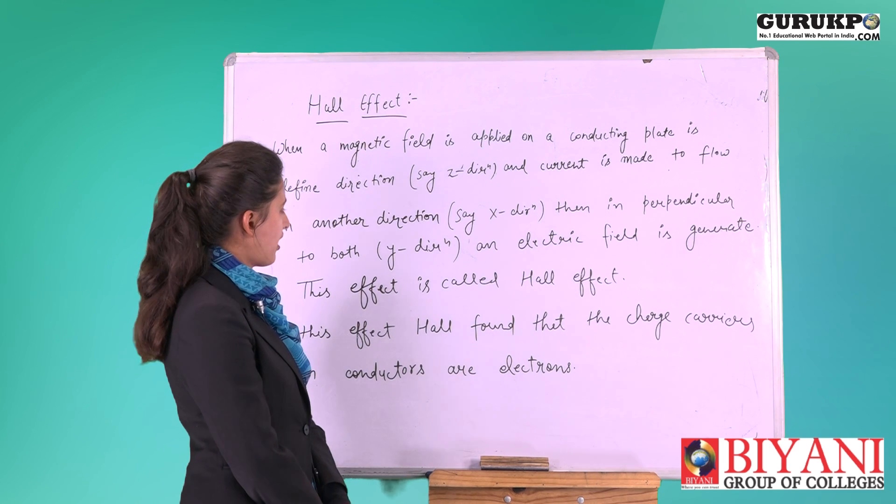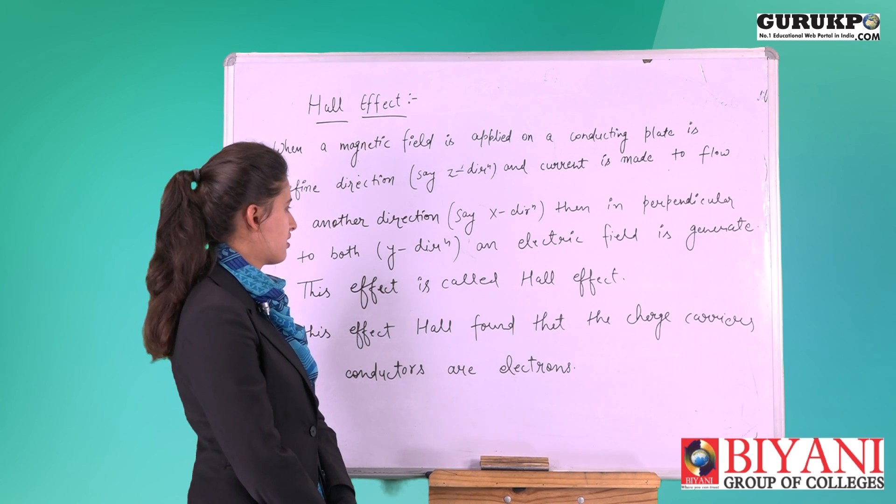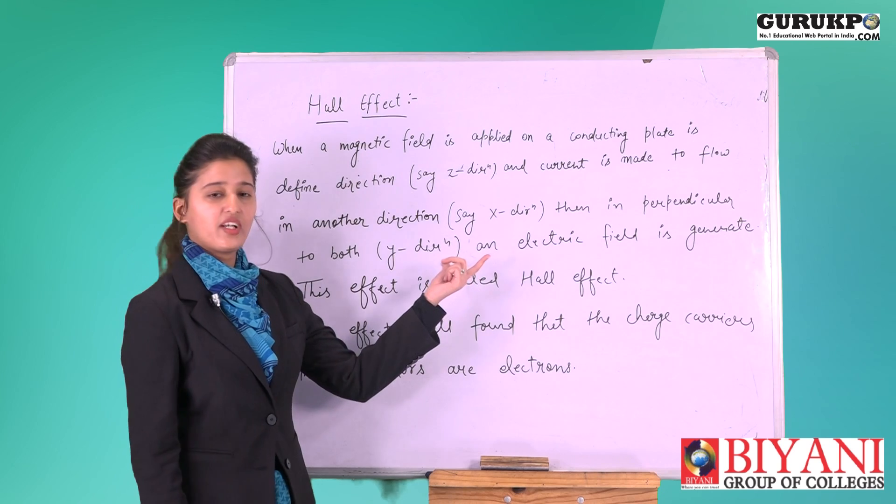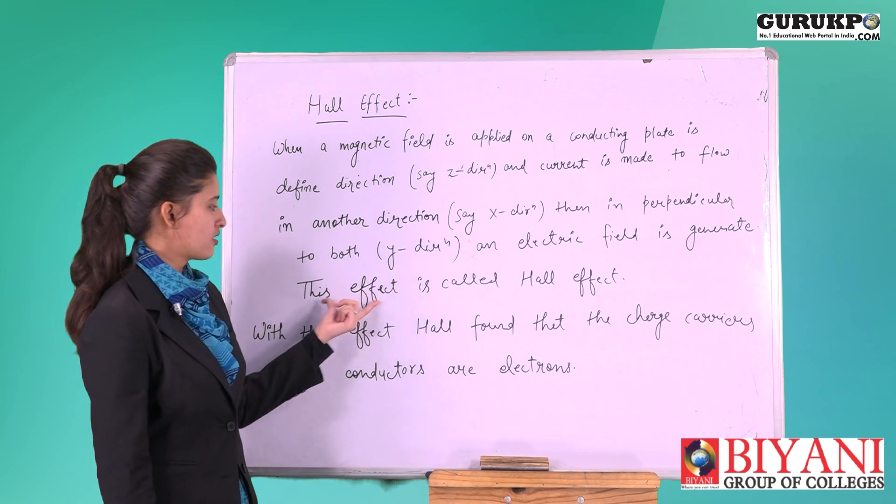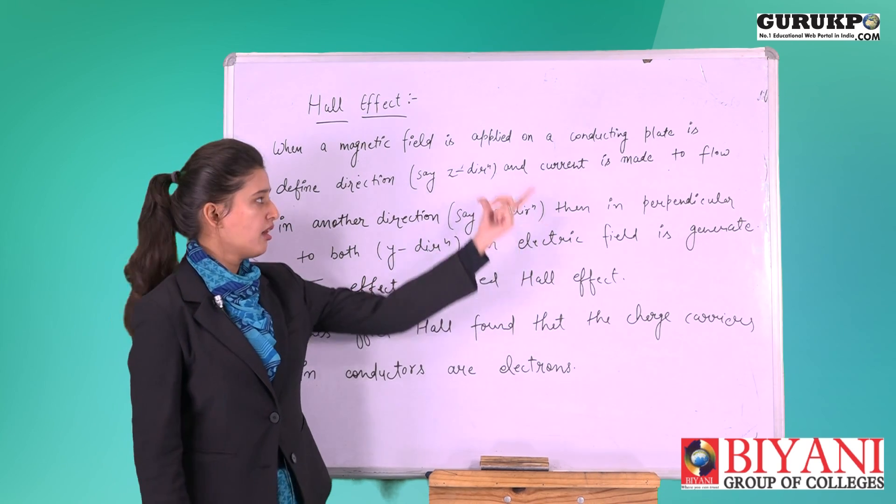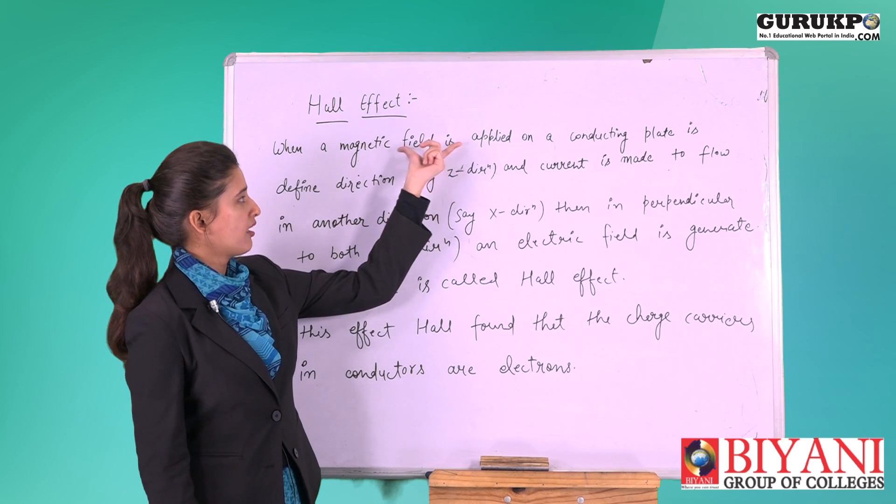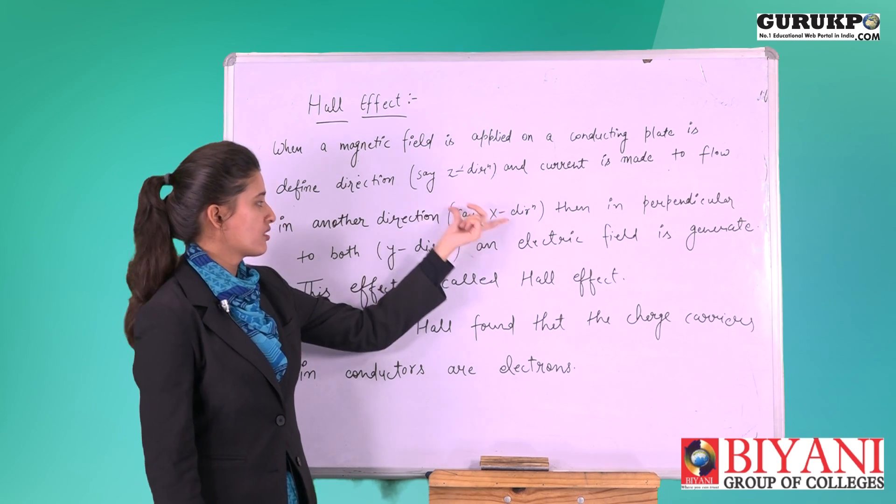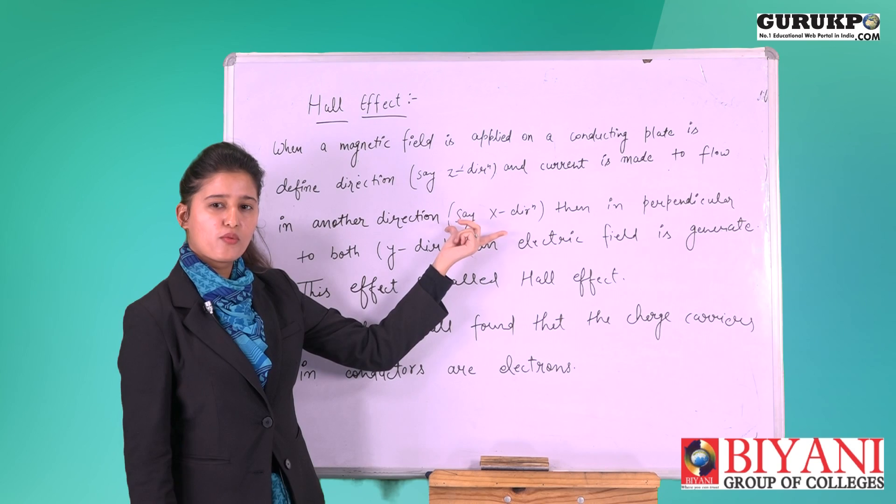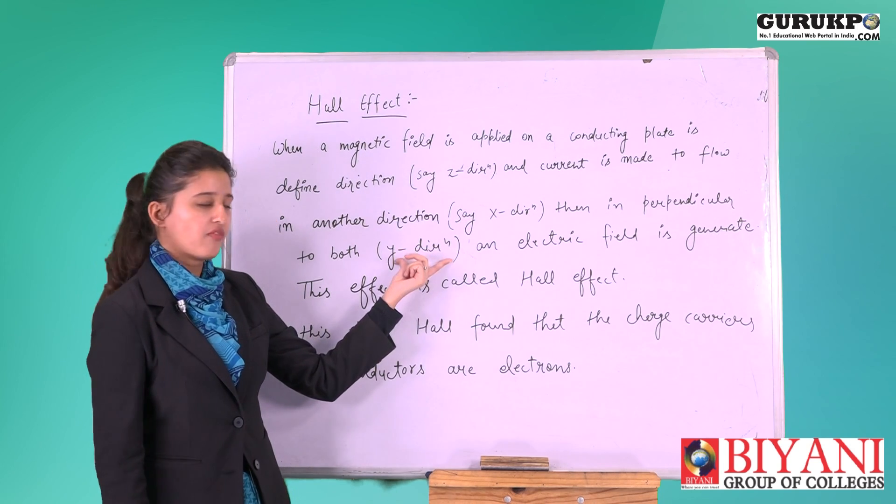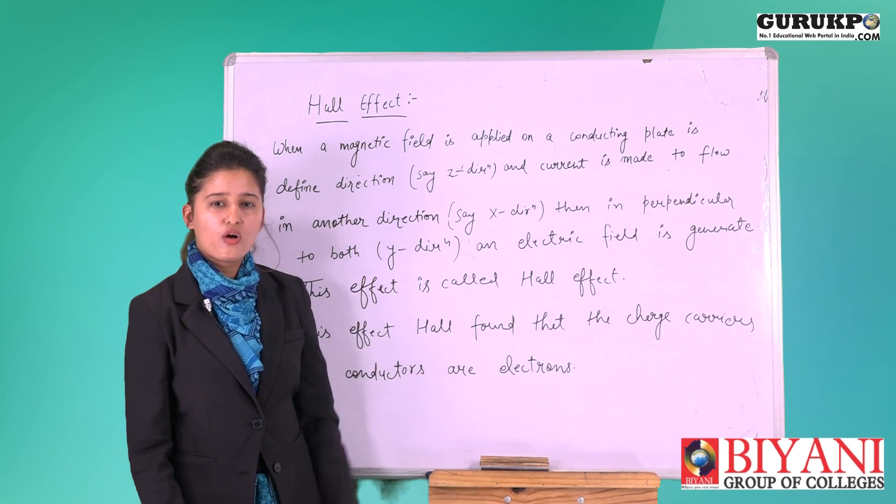Then in perpendicular to both, y direction, an electric field is generated. Electric field is generated in y direction. This effect is called Hall Effect. Z direction has magnetic field, x direction has current, and perpendicular to both is electric field which is in y direction.